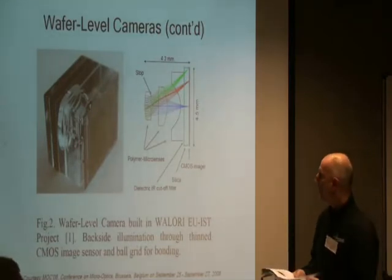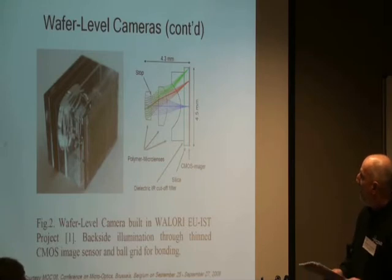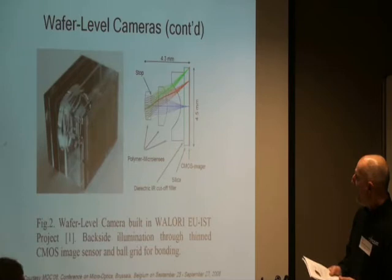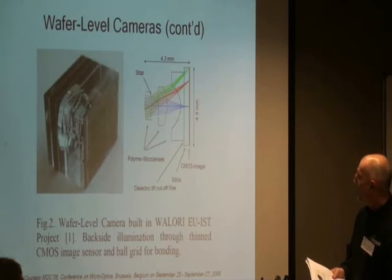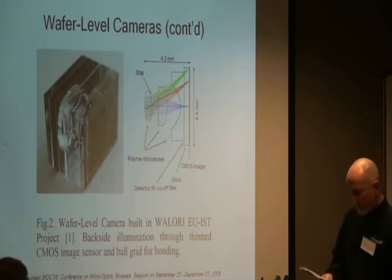Here is a picture of a fairly early, fairly large wafer-level camera, with dimensions of about 4.5 millimeters in size, a three-element lens, and definitely not telecentric. A lot of the chip manufacturers now are demanding telecentricity for their optics at the back, so this particular design wouldn't have been possible. They incorporate IR cutoff filters and polymer microlenses of various indices.